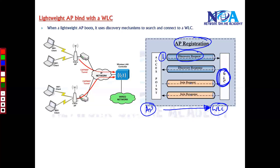There may be one or more WLCs in your network. The WLC receives the discovery request message from the access point and responds to it. This second step is called the Discovery Response, which is sent by the WLC back to the access point, completing the discovery phase.